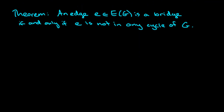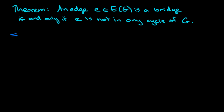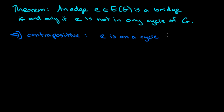Let's take a look at the proof, which is quite straightforward. We'll prove the first direction: if an edge is a bridge, then it does not lie on any cycle of the graph. We're going to use the contrapositive, which states that an edge E which lies on a cycle is not a bridge. So what we want to show is: if E is on a cycle, then E is not a bridge. That's the contrapositive of the original if-then statement.